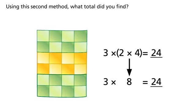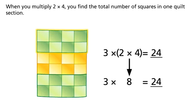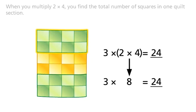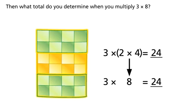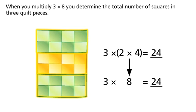Using this second method, what total did you find? When you multiply two times four, you find the total number of squares in one quilt section. Then, when you multiply three times eight, you determine the total number of squares in three quilt pieces.